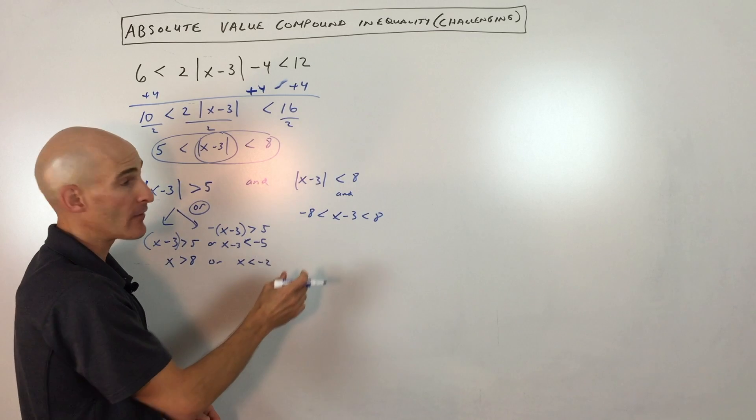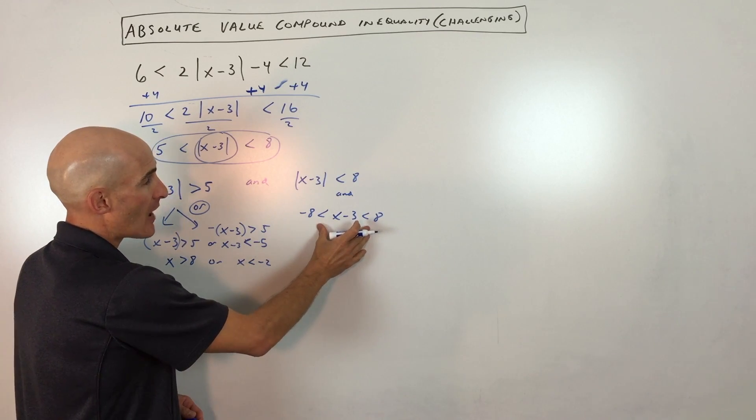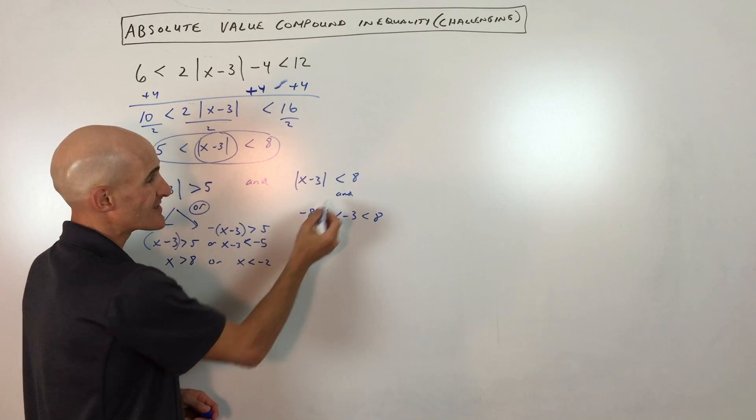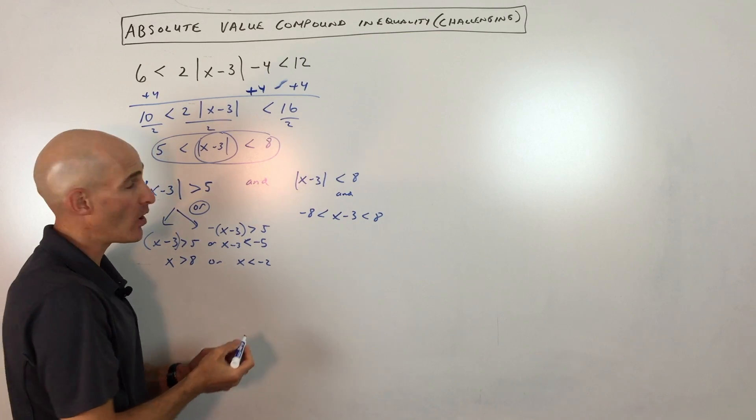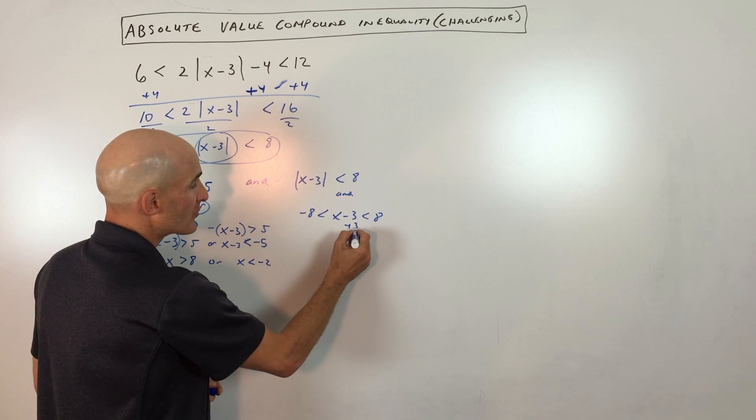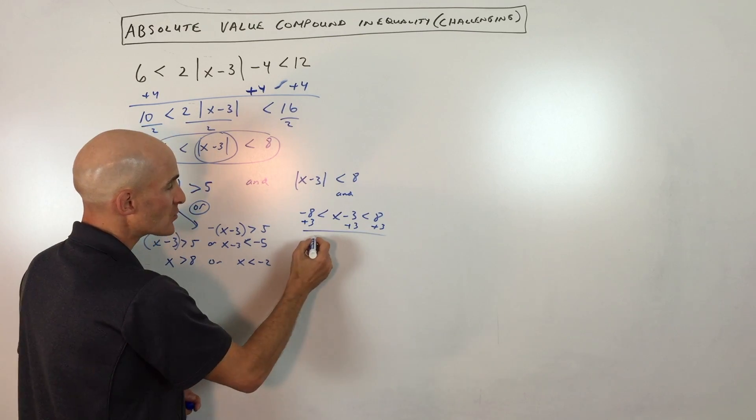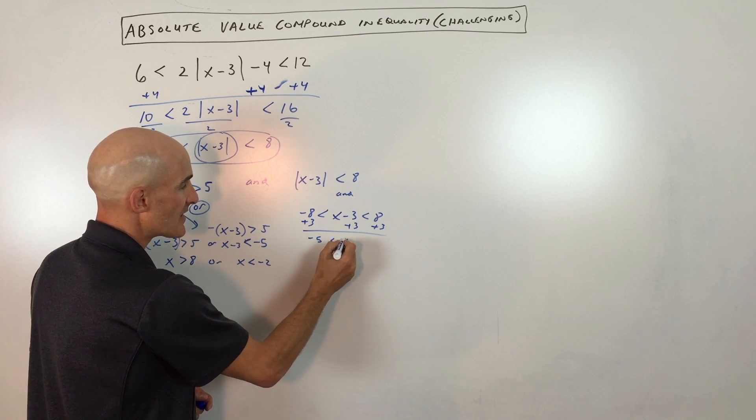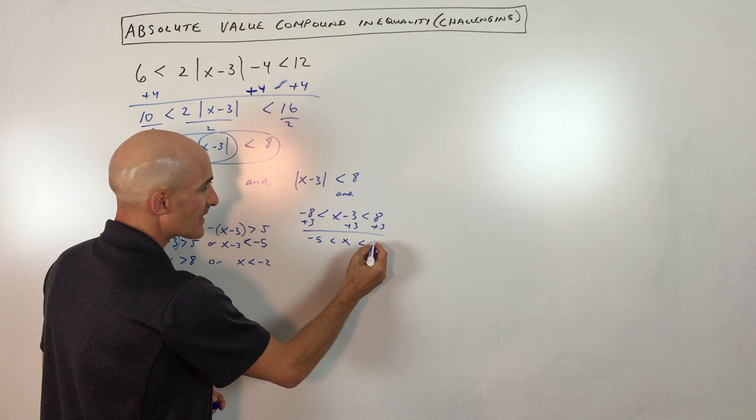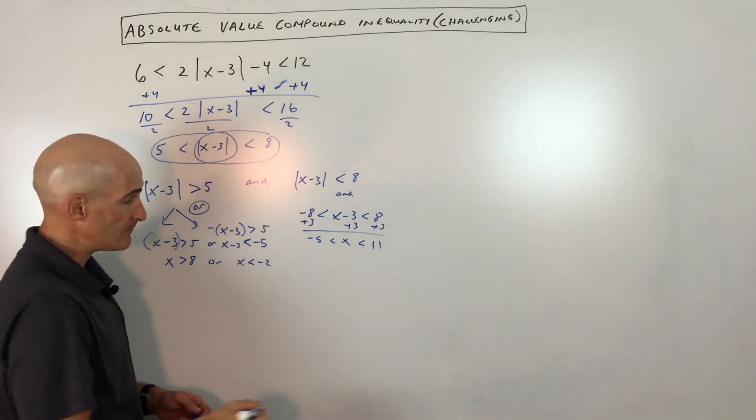So this is kind of a quick way of writing these problems, these absolute value inequality problems, when it's less than, you can write it as a compound inequality. So I'm going to add 3 now to the middle, the right, and the left side of this inequality, so we get negative 5 is less than x is less than 11.